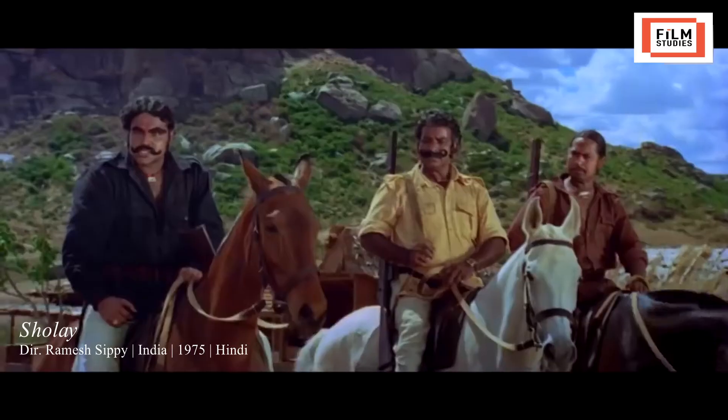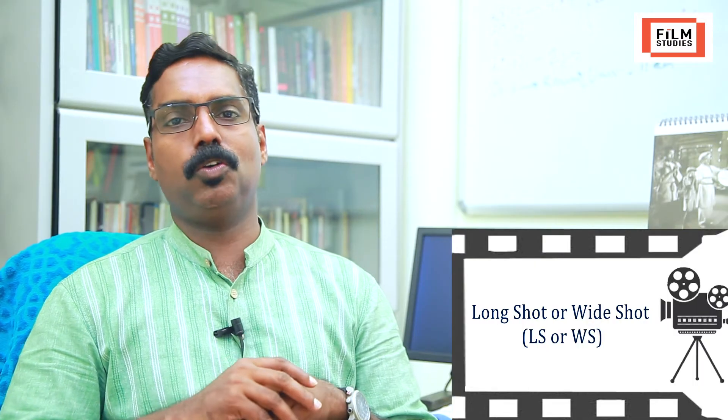In a medium long shot, human figures are generally captured from the knee upward. It is also known as the 'American shot' because it was frequently used in American Western movies to show the gangster or hero along with his gun holsters tied at the waist. In these kinds of shots, more characters can be depicted and more spatial planes shown. At times, the surroundings of the object are also given preference.